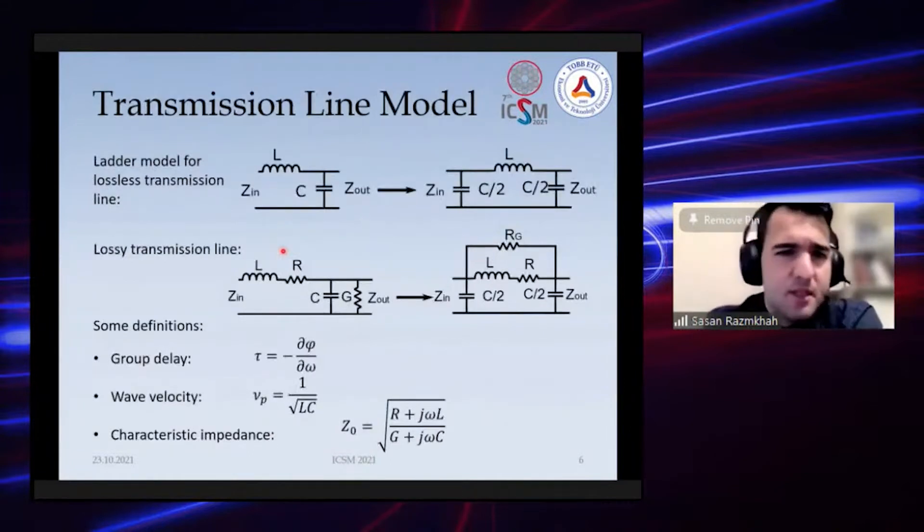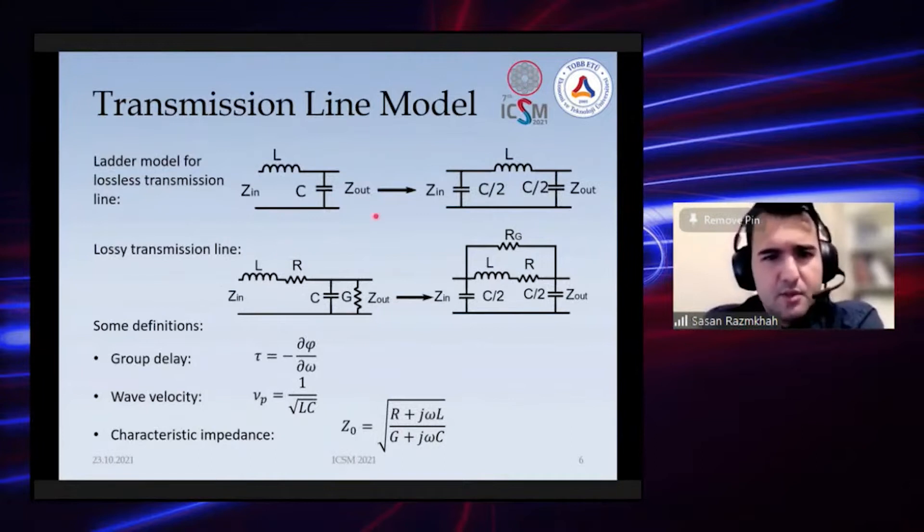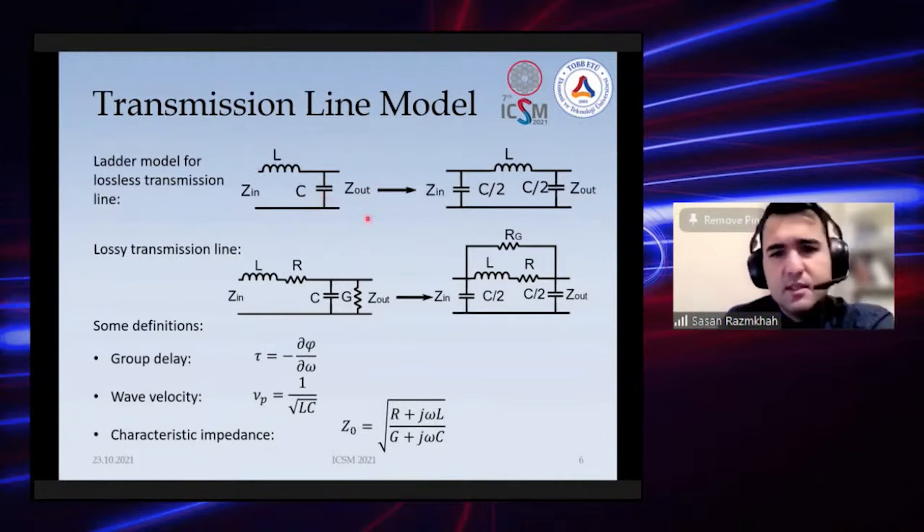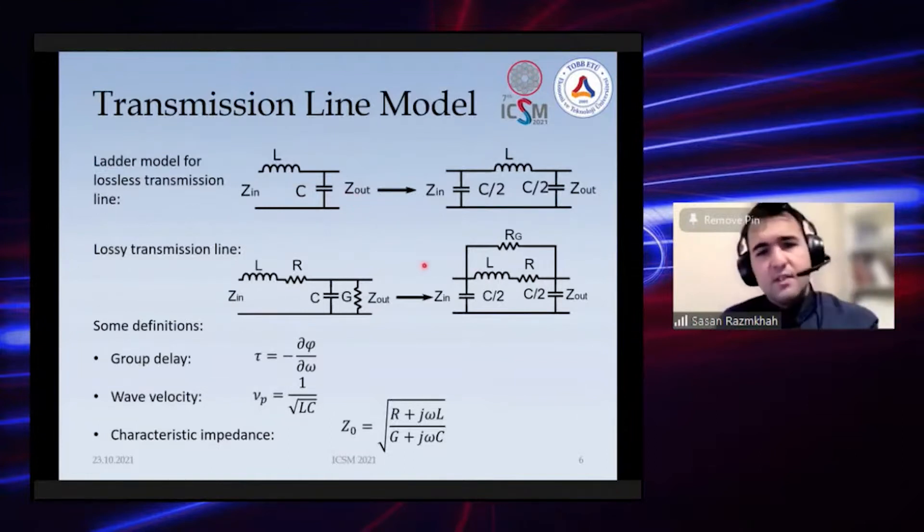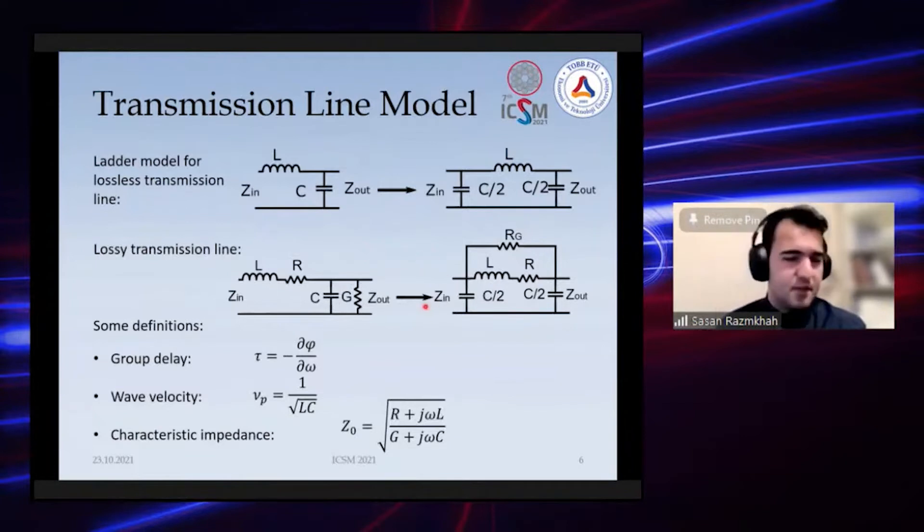I think you're familiar with these models, so I won't go long about this. These are basically the models we use for transmission lines. For lossless models we use just L and C and the pi model and the ladder. Then if you have lossy transmission lines, which at higher frequencies in superconductors we get from Mattis-Bardeen equations, we get these resistors and impedances.